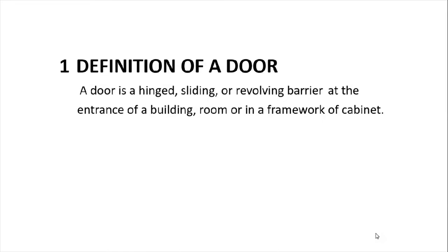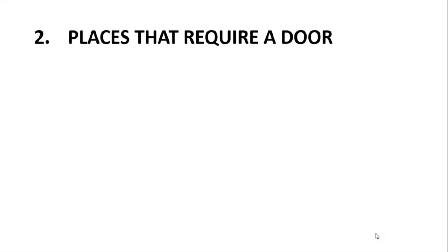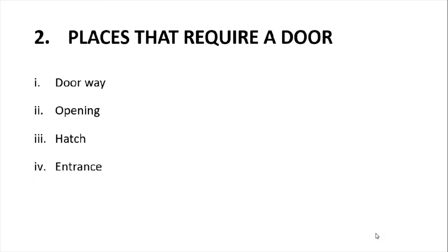Let's look at the first objective — definition of a door. A door is a hinged, sliding or revolving barrier at the entrance of a building, a room, or in a framework of a cabinet. Our second objective is places that require a door. We require a door on a doorway, on an opening, on a hatch, on an entrance, and also at an exit.